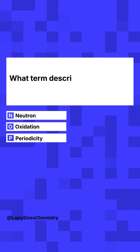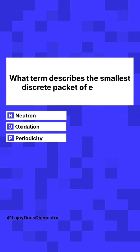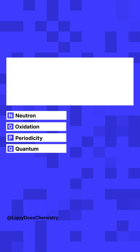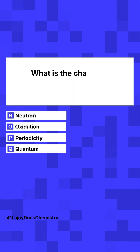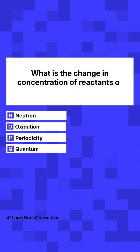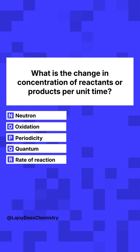Q. What term describes the smallest discrete packet of energy? A quantum. R. What is the change in concentration of reactants or products per unit time? Rate of reaction.